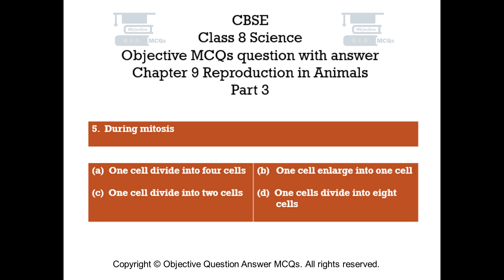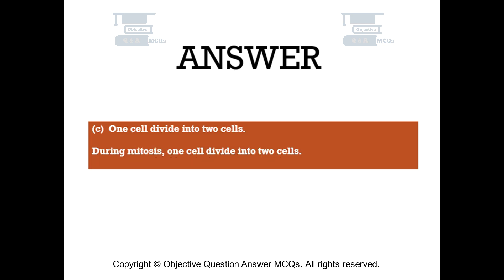Question number 5. During mitosis. Option A: One cell divides into four cells. Option B: One cell enlarges into one cell. Option C: One cell divides into two cells. Option D: One cell divides into eight cells. The right answer is option C. During mitosis, one cell divides into two cells.